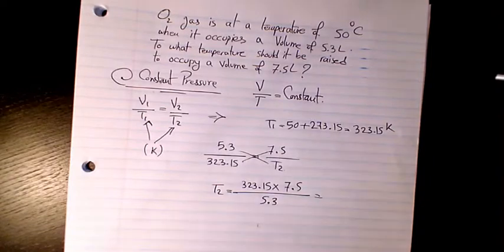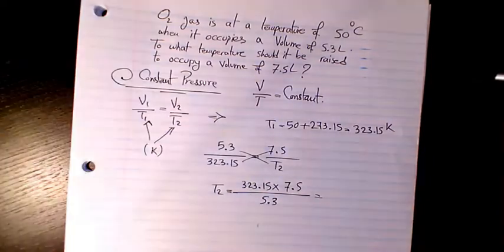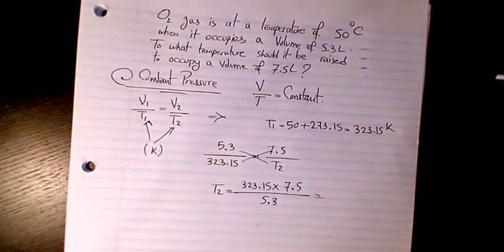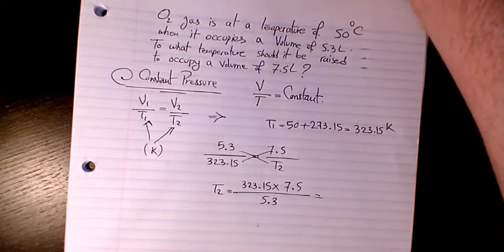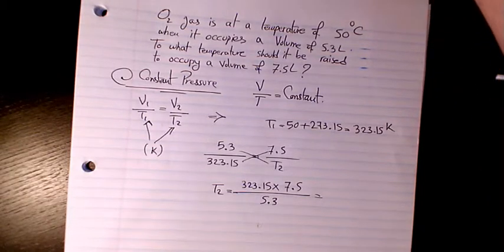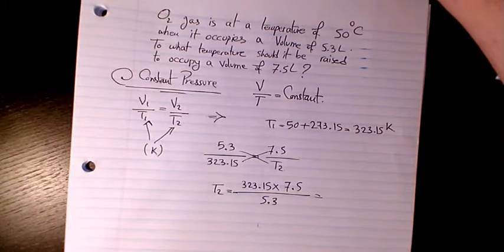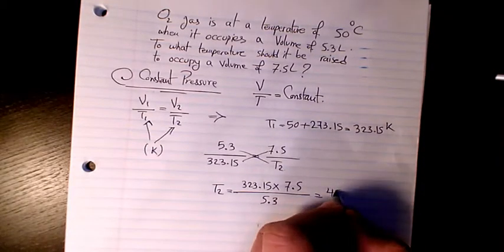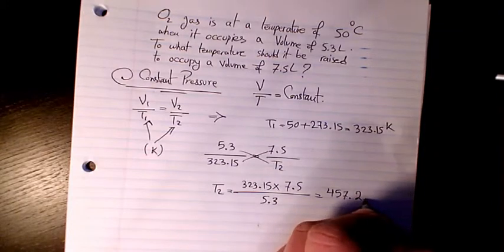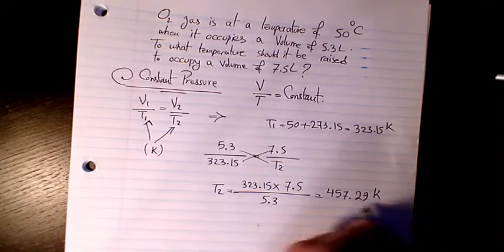That will make it 323.15 multiplied by 7.5 divided by 5.3. That will be 457.29 Kelvin.